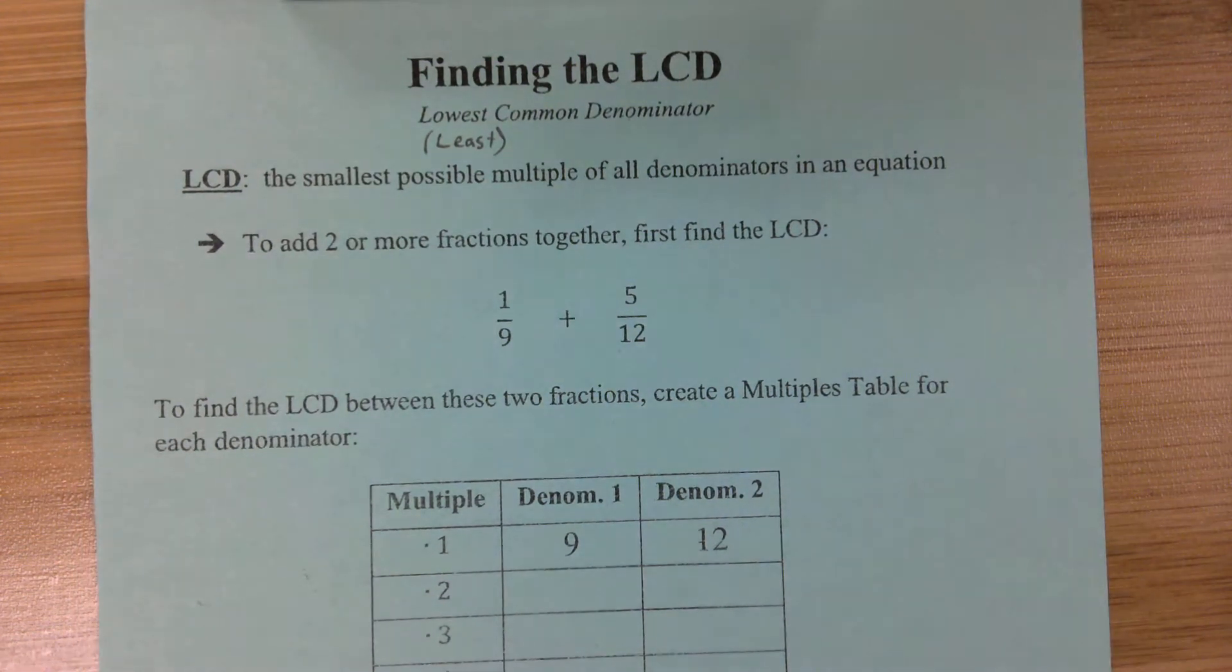Can I have a volunteer read out the definition of an LCD for everyone, please? The smallest possible multiple of all denominators in an equation.